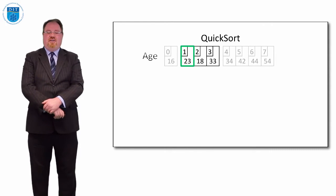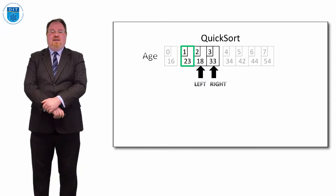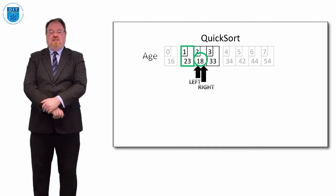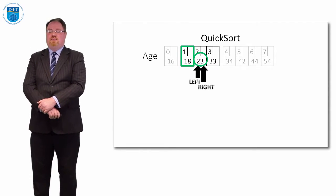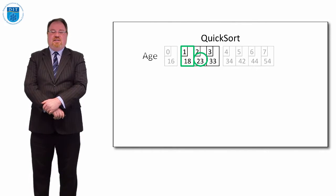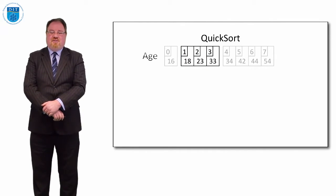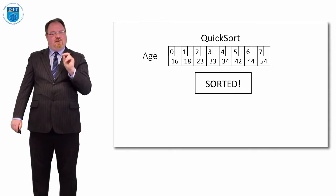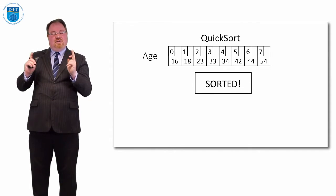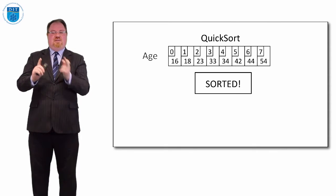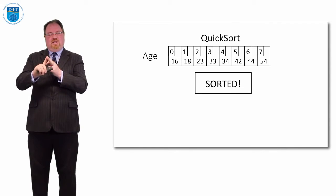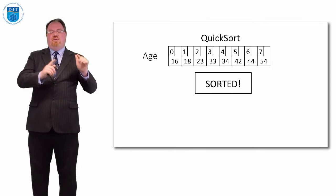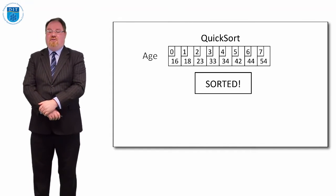We pick our pivot as 23 for the subarray consisting of 23, 18, and 33. We have our left and right pointers, and they meet at number 18, so we swap 18 and 23, and then that array is sorted — and in fact the whole array is sorted. So this is real divide and conquer: pick a pivot at random, find a value bigger than it on the left and smaller on the right, swap them, keep moving the pointers until they meet, then swap that meeting point with the pivot. Keep redoing that with each subarray until the whole thing is sorted.